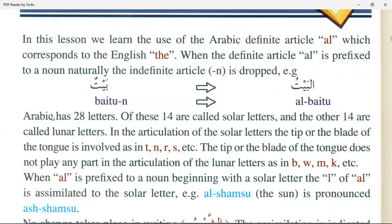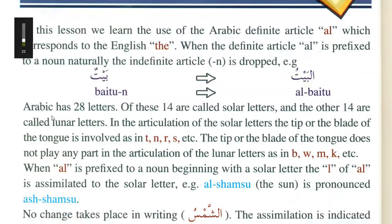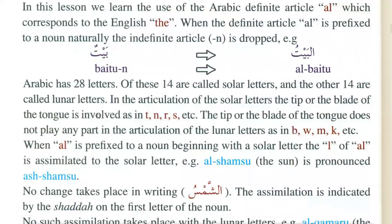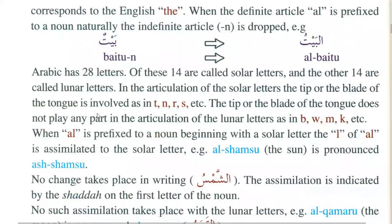Assalamu alaikum. Wa alaikum assalam. Arabic has 28 letters — of these, 14 are called Solar letters and the other 14 are called Lunar letters.